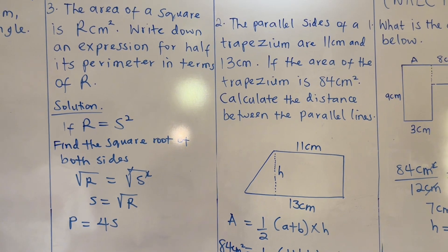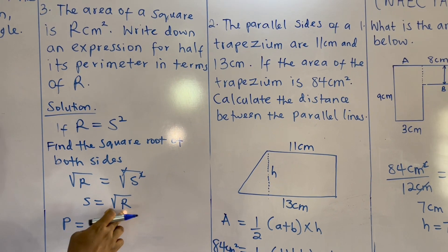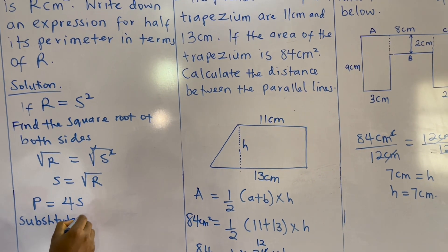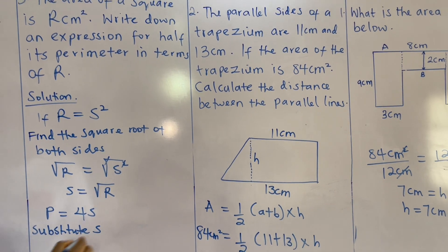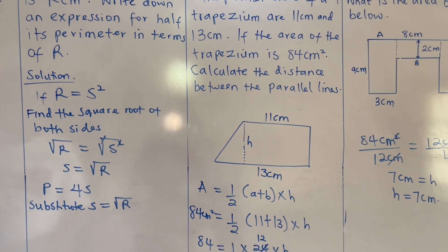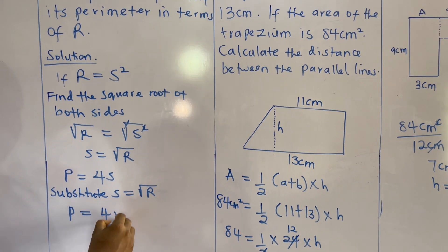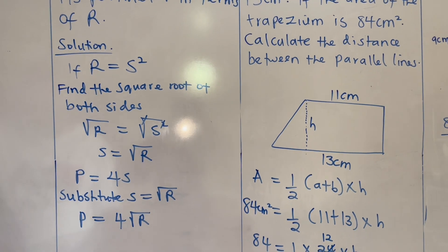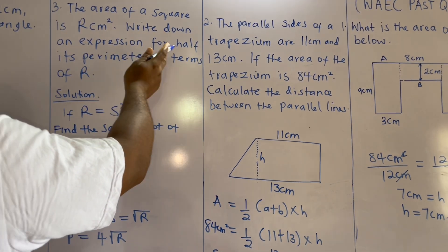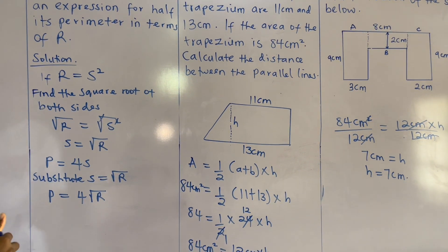The perimeter of a square is 4s. Substituting s equals square root of r, the perimeter P equals 4 times the square root of r. The question asks for half the perimeter, so we divide both sides by 2.